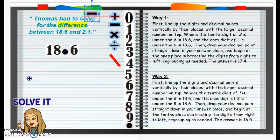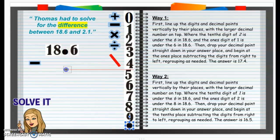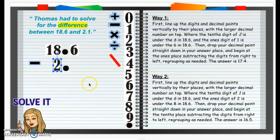And then we are going to subtract — minus, because we're finding the difference. 2 and 1 tenths. We need to line that decimal up. Do not forget to line that up. So 2 and 1 tenths: 2 is in that 1's place, and also the 8 is in that 1's place. And then we have 1 tenths, and up top we have 6 tenths.